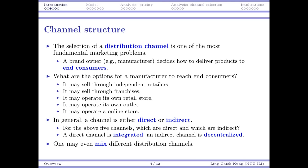For the direct case, I as a manufacturer reach consumers directly by myself. For example, if I own a retail store, I decide the retail price, how many personnel to hire, and what should be stored there. That's a direct channel. But if I sell to independent retailers, they make their own decisions — that becomes an indirect channel. A direct channel is integrated, while an indirect channel is decentralized.